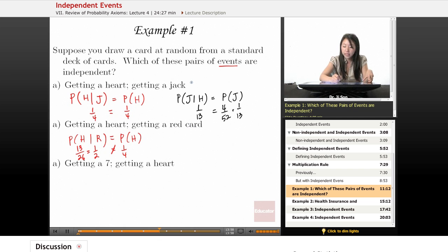So here I'd say independent. Here, not independent. And remember, you could always test it the other way as well. Probability of red given heart—does that equal the probability of getting a red card? What about this last one?